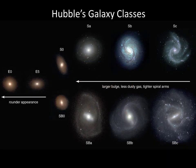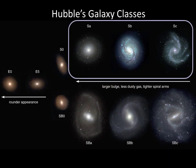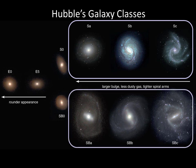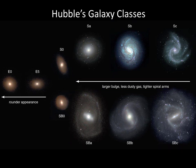The two forks show spiral galaxies, designated by the letter S for ordinary spirals and SB for barred spirals, followed by a lowercase a, b, or c. The bulge size decreases from a to c, while the amount of dusty gas increases.